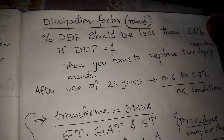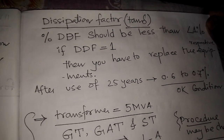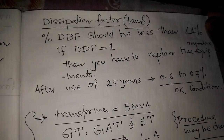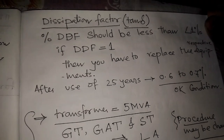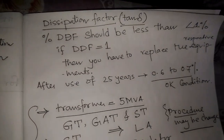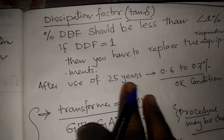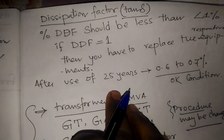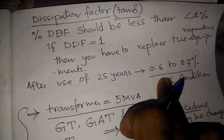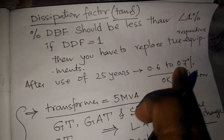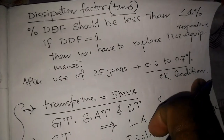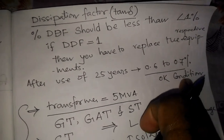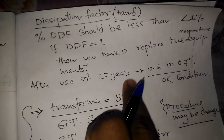If the DDF is 1 or above 1%, then you have to replace the respective equipment. After use of 25 years, if we do the Tan Delta test and get a result of 0.6 to 0.7%, the material or equipment condition is okay as per testing standards.